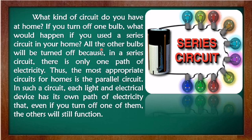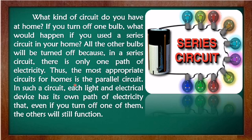What kind of circuit do you have at home? If you turn off one bulb, what would happen if you use a series circuit in your home? All other bulbs would be turned off because in a series circuit, there is only one path of electricity. Thus, the most appropriate circuit for homes is the parallel circuit. In such a circuit, each light and electrical device has its own path of electricity, so even if you turn off one of them, the others will still function — unlike a series circuit.